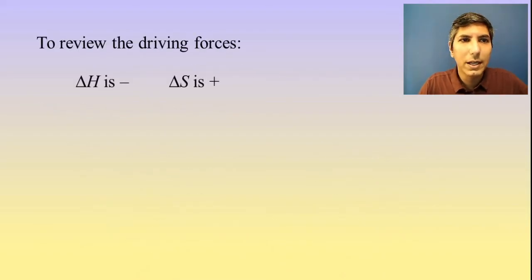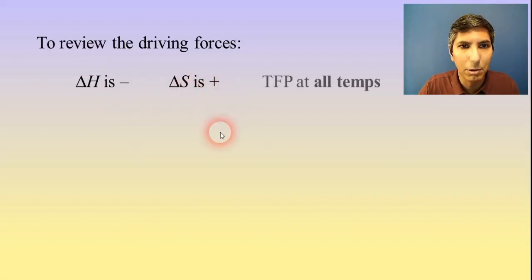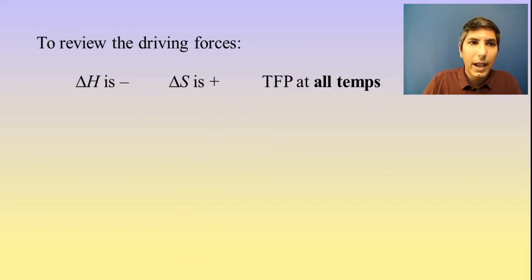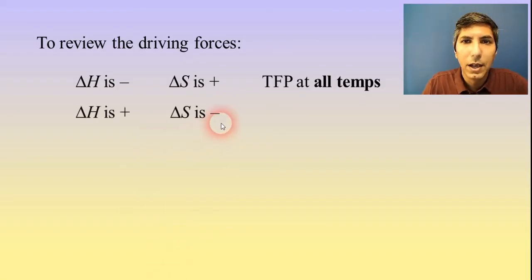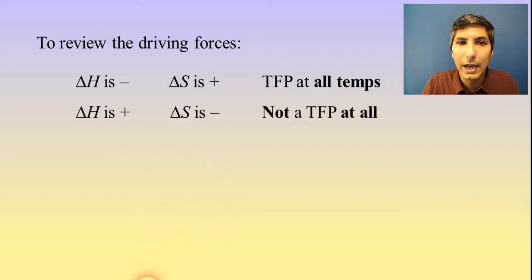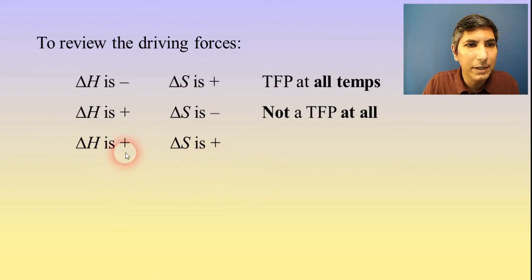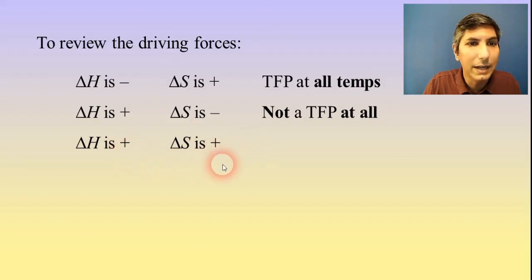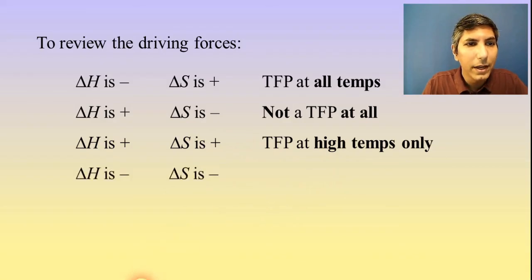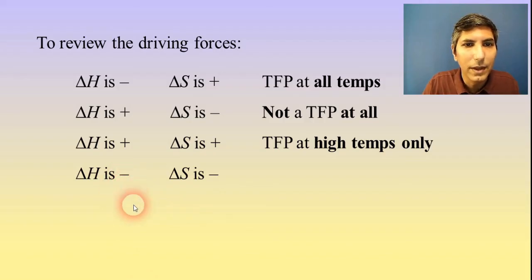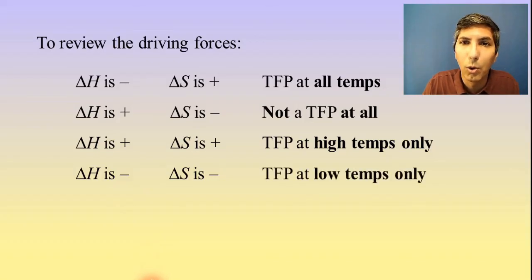Let's review. If we have a reaction that's exothermic (delta H is negative) and entropy is increasing, the universe likes both of those things, so it's going to be a thermodynamically favored process at all temperatures. If it's the reverse — endothermic and entropy is decreasing — the universe doesn't like either, so it will not be thermodynamically favored at any temperature. If both delta H and delta S are positive, the reaction is driven by entropy and will be thermodynamically favored at very high temperatures only. If both are negative, it's driven by enthalpy, and it'll be thermodynamically favored at low temperatures only.